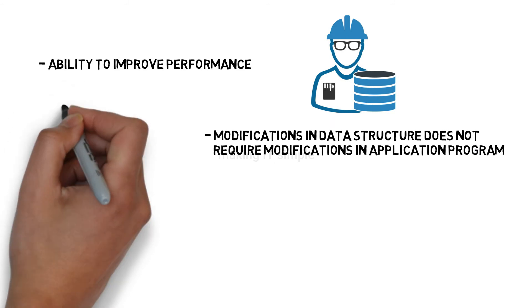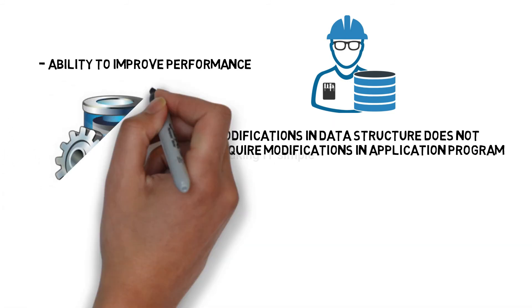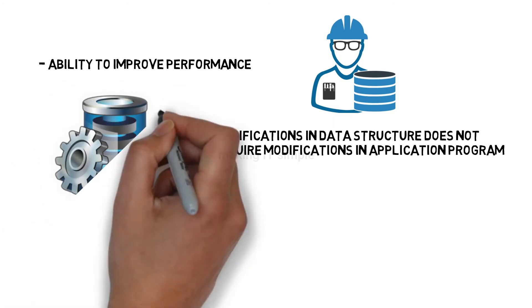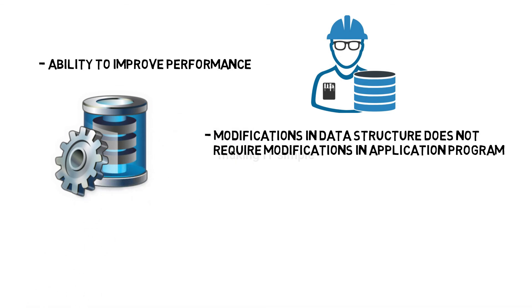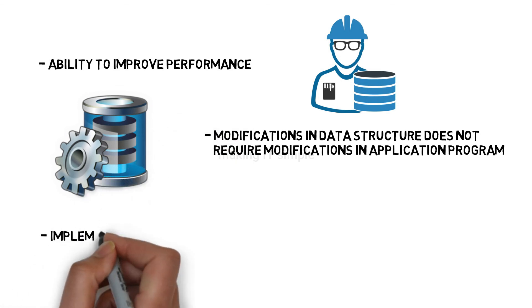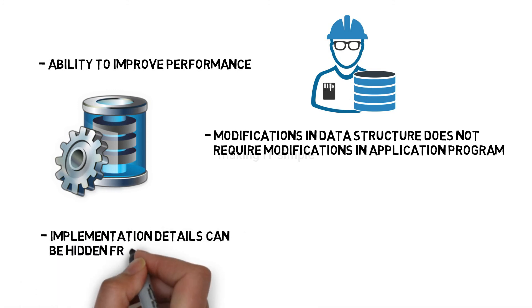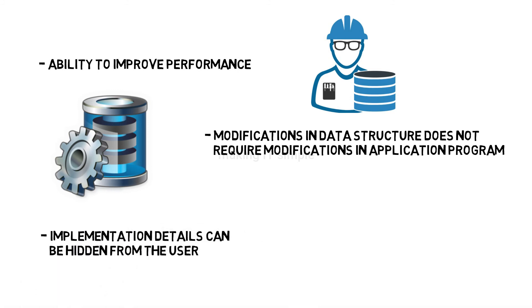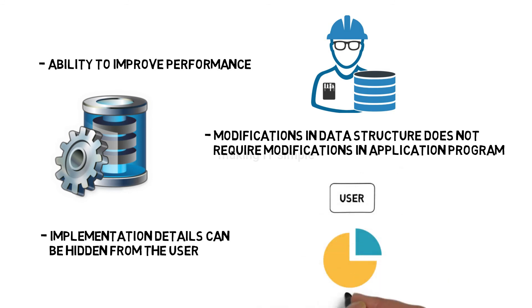As we make data independent, there are no dependencies and we can modify at one level without affecting the top level. Another advantage is that implementation details can be hidden from the user — the user is only shown data relevant to them, and all other irrelevant data is hidden for better user interaction.